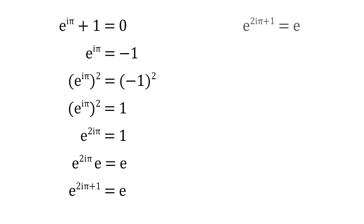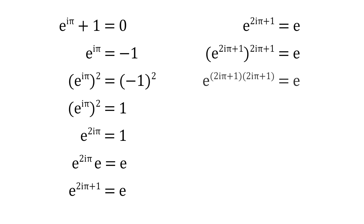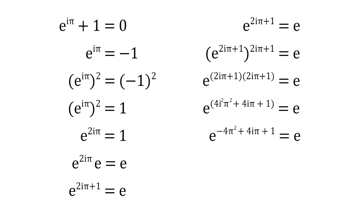Since e is equal to e to the power of two i pi plus one, we can substitute that into the equation, and we get e to the power of two i pi plus one, that term to the power of two i pi plus one, and all of that equals to e. We can simplify this further by multiplying two i pi plus one by itself, and we get e to the power of four i squared pi squared plus four i pi plus one, and all of that equals to e. Now since i squared is equal to negative one, the equation becomes e to the power of negative four pi squared plus four i pi plus one, and all that equals to e.